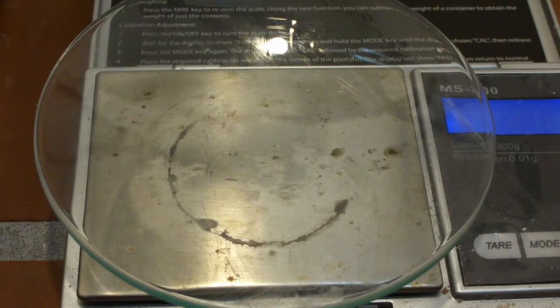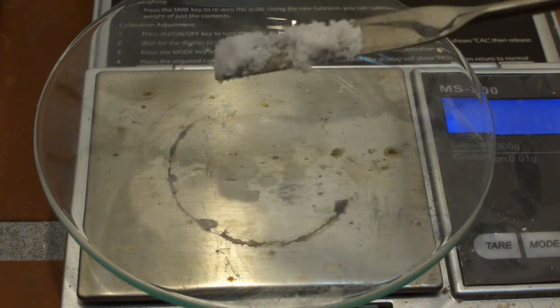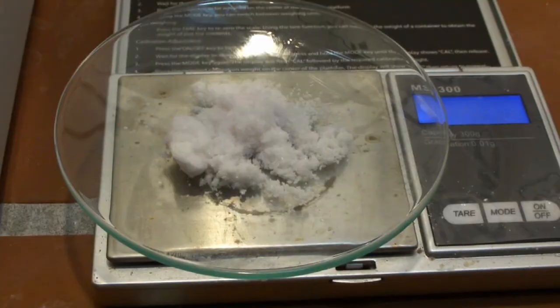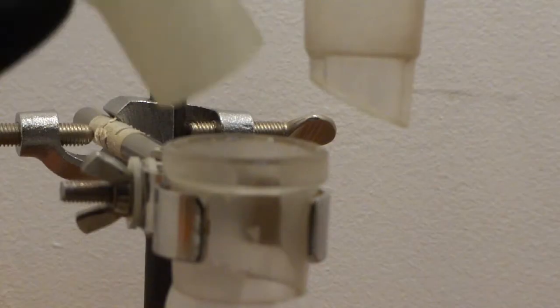While this was mixing, we measured out 3 grams of p-toluene sulfonic acid monohydrate. This was then added to the round bottom flask containing the aqueous sulfuric acid.